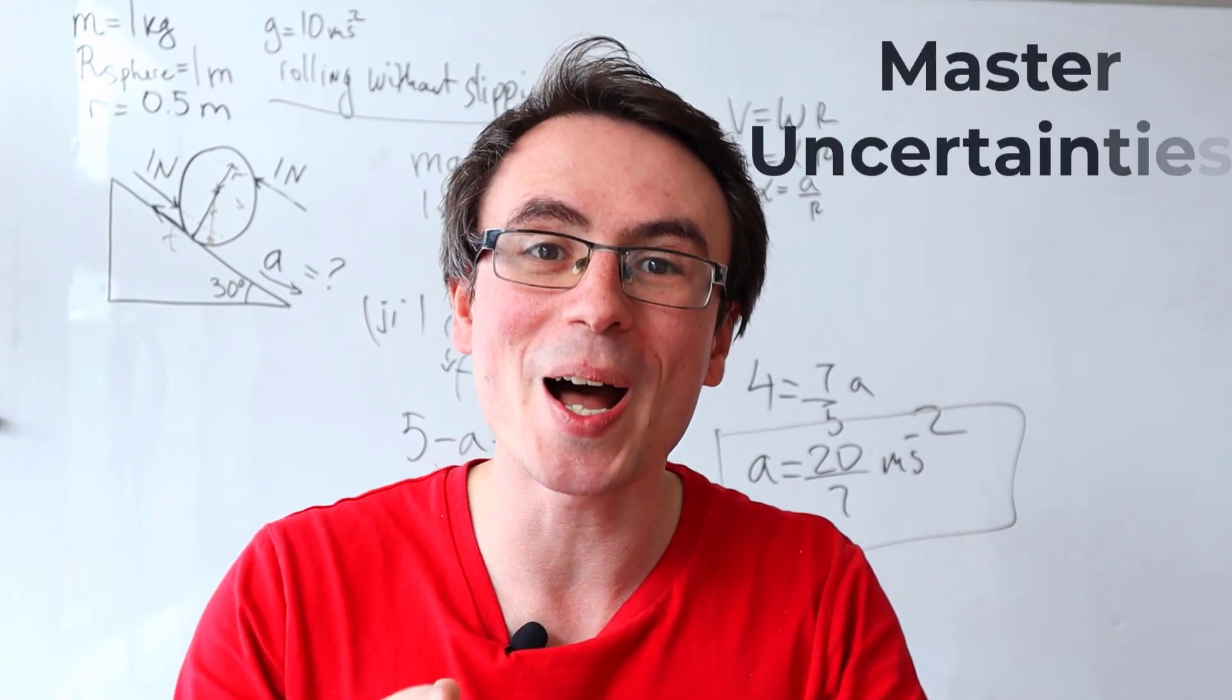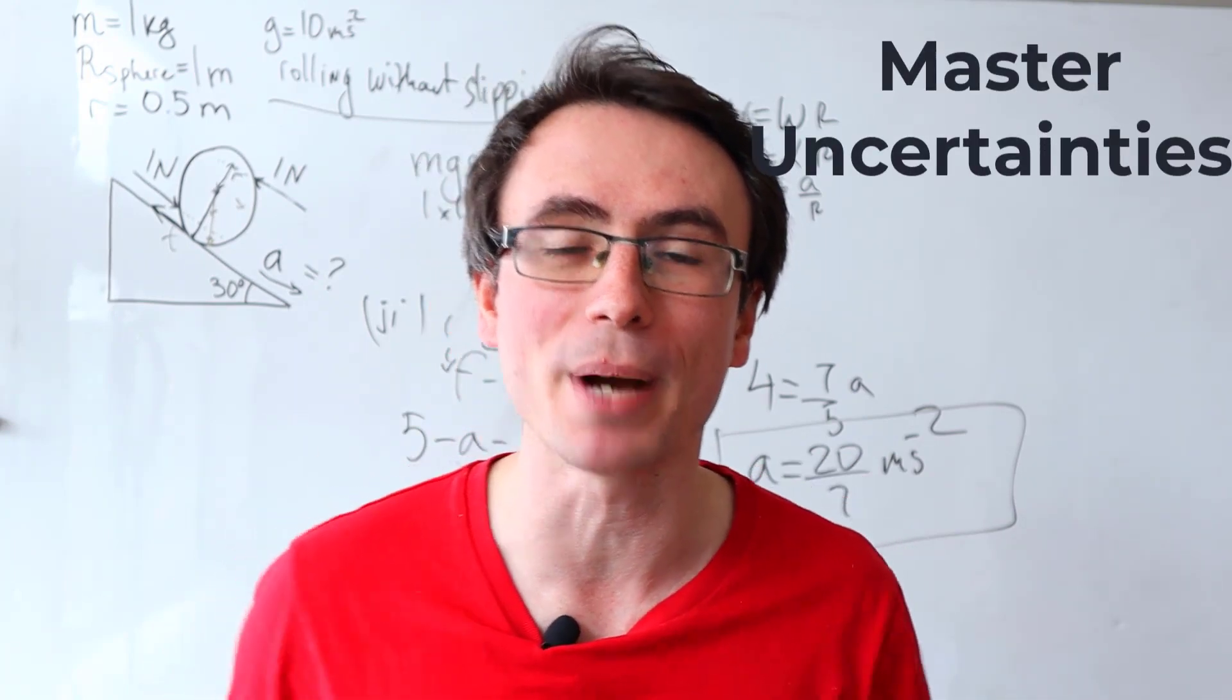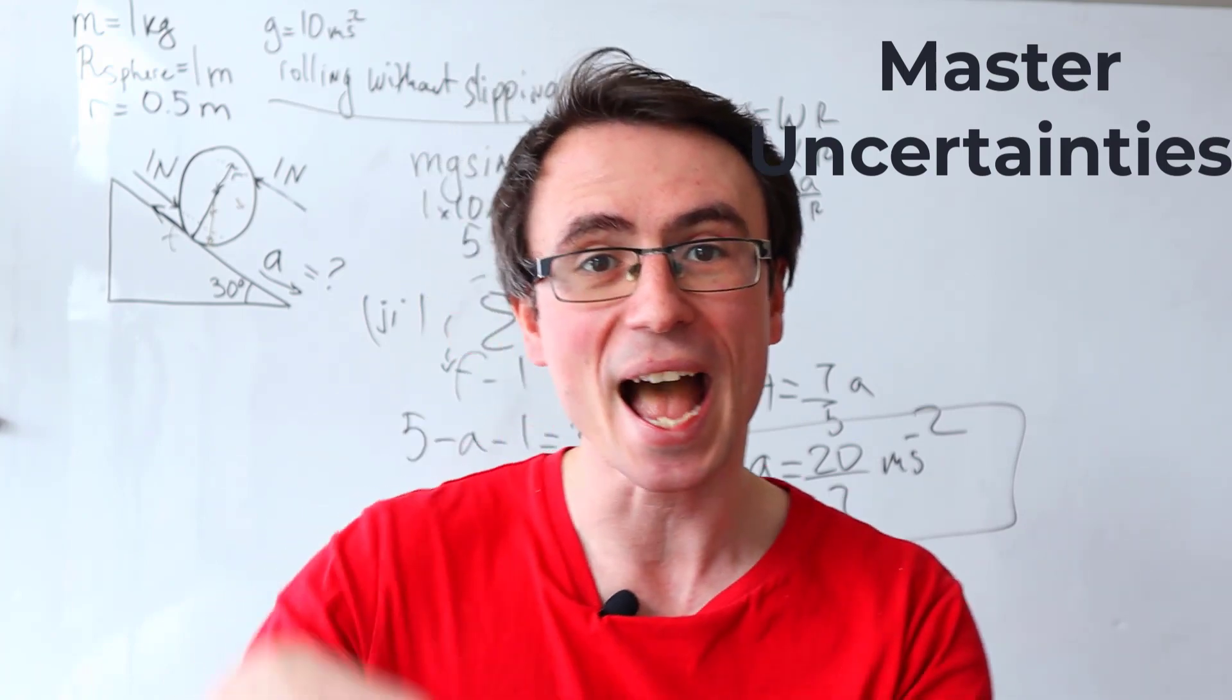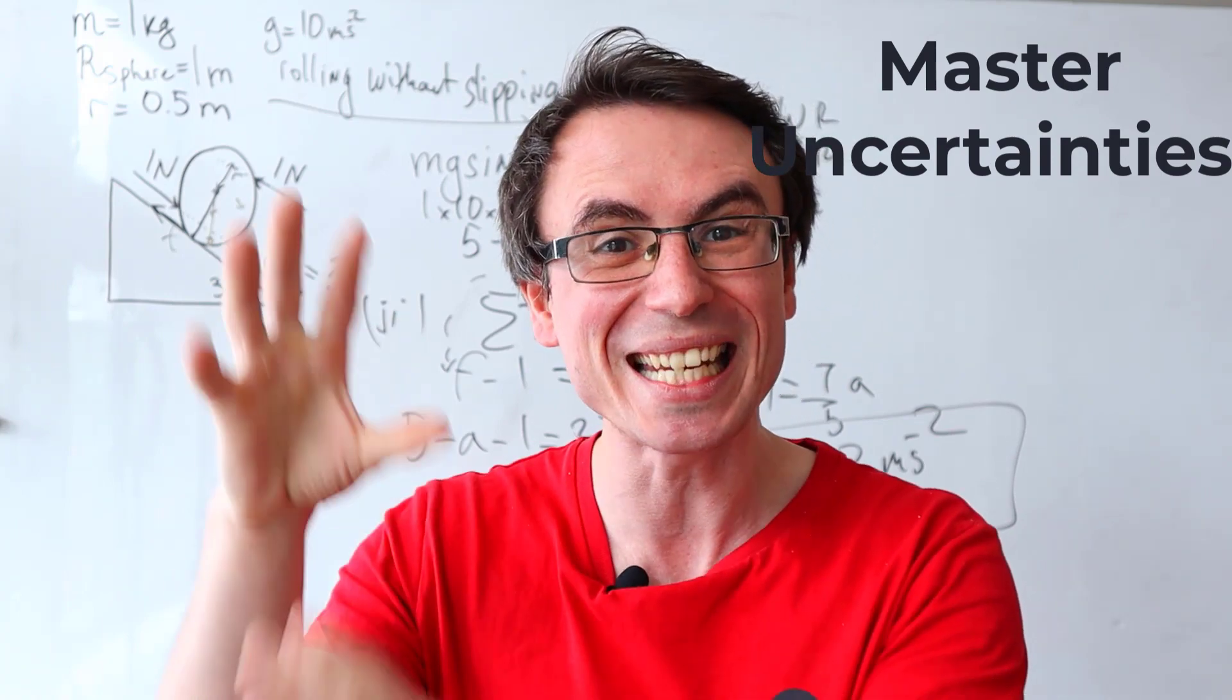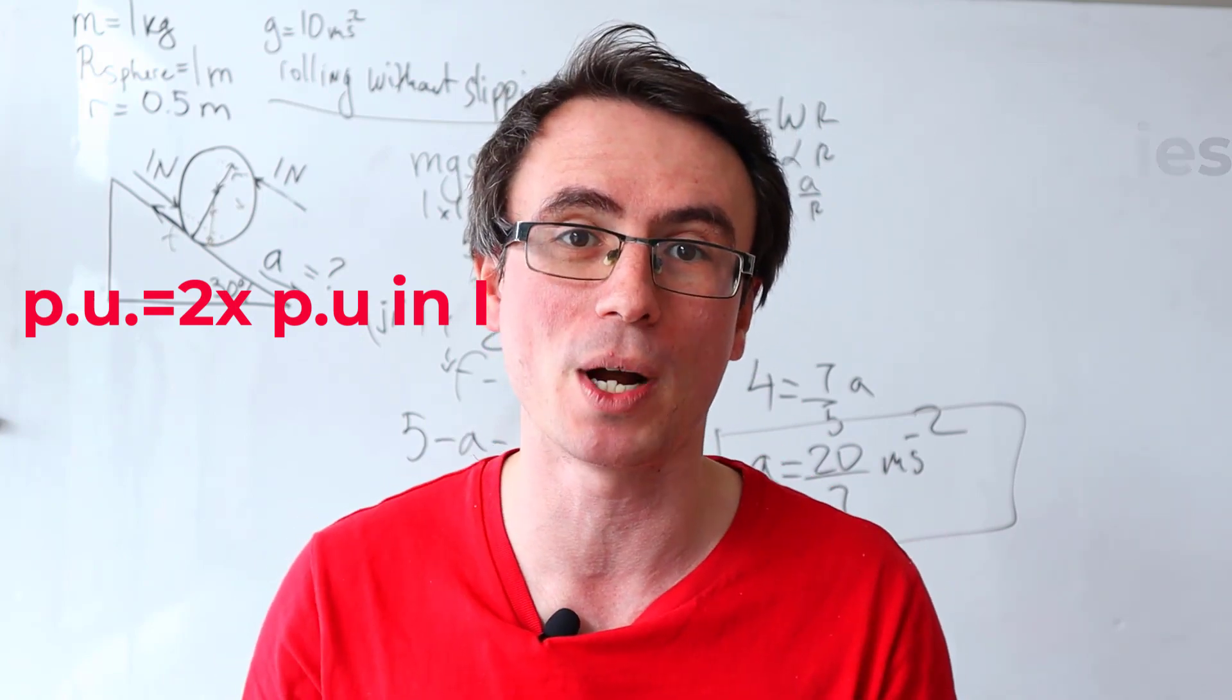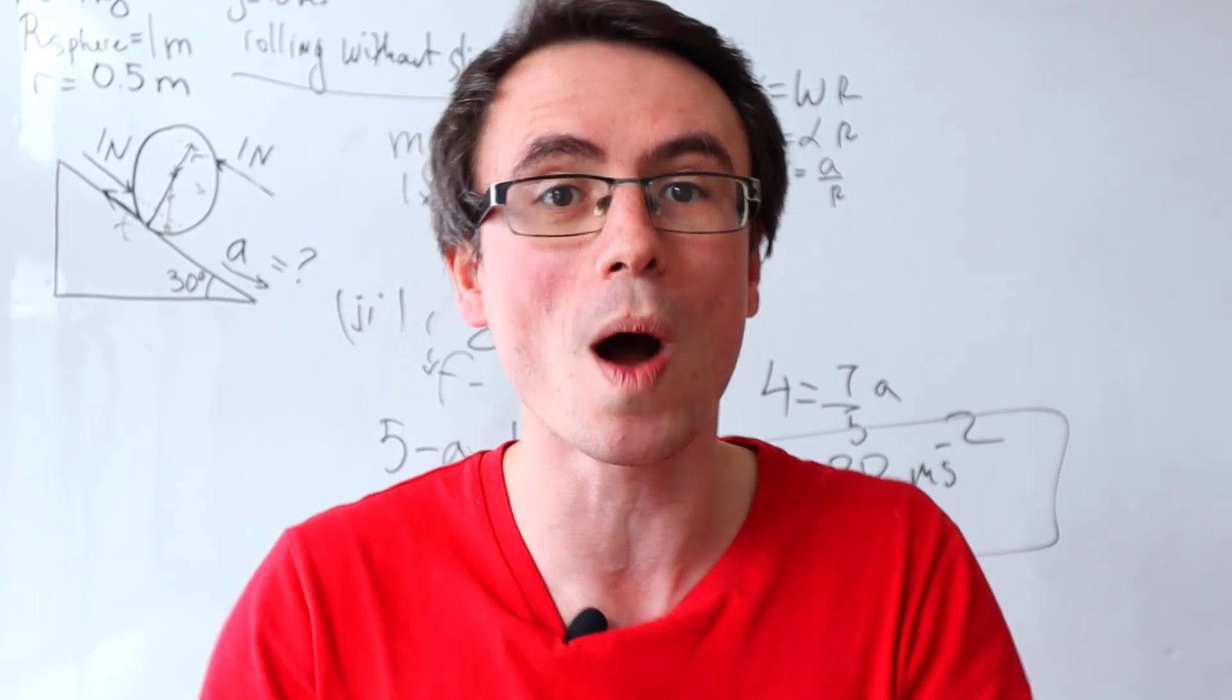Next one, master combining uncertainties. They will appear on every exam paper. Pay particular attention for common mistakes such as having a square. If you see a quantity that's squared you're going to need to multiply the percentage uncertainty of that quantity by the power because squaring the quantity is essentially using it twice.